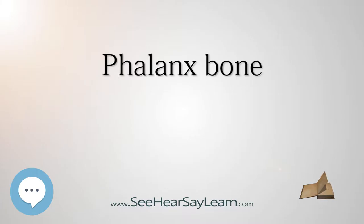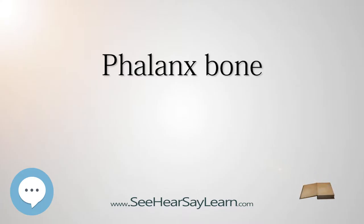The phalanges are the bones that make up the fingers of the hand and the toes of the foot. There are 56 phalanges in the human body, with 14 on each hand and foot. Three phalanges are present on each finger and toe, with the exception of the thumb and large toe, which possess only two. The middle and far phalanges of the fourth and fifth toes are often fused together — a condition called symphalangism.